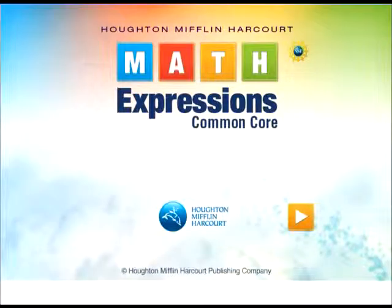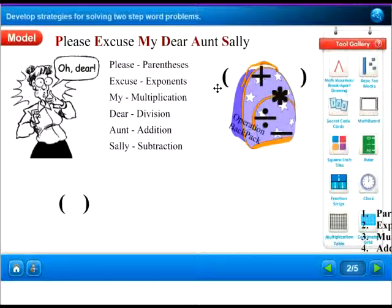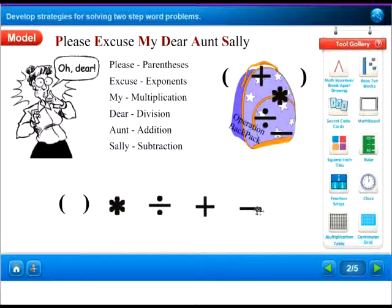Let's look at a model and see why we do Operation Backpack. It's called Please Excuse My Dear Aunt Sally. Please is parentheses. Excuse is exponents, which you'll get into in fourth and fifth grade. My is multiplication, Dear is division, Aunt is addition, and Sally is subtraction. Our equations need to be placed in order — we don't start with subtraction. We start with the parts in parentheses first, then multiply and divide, then add, and finally subtract.